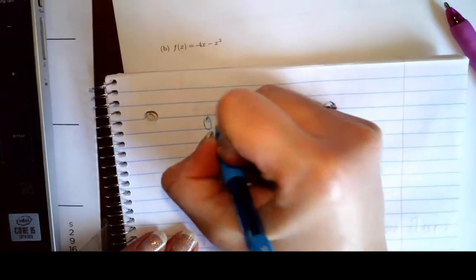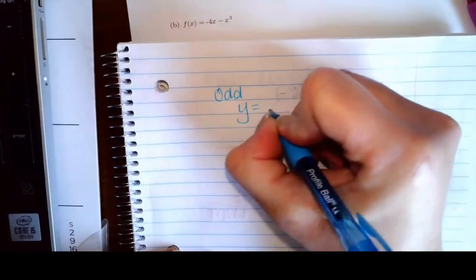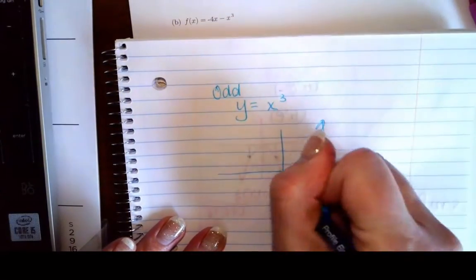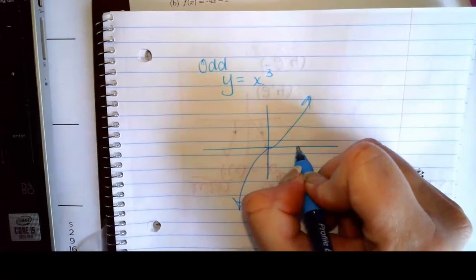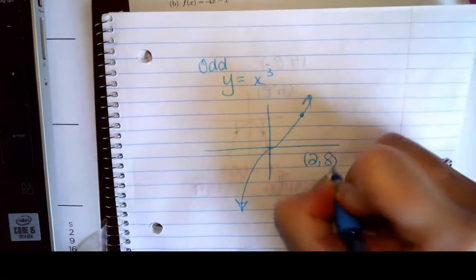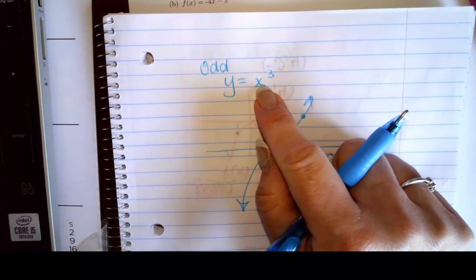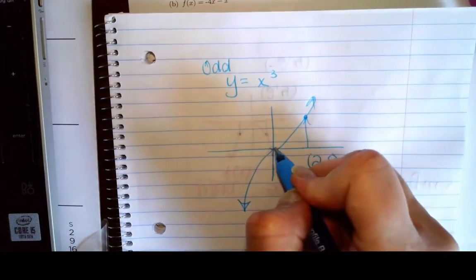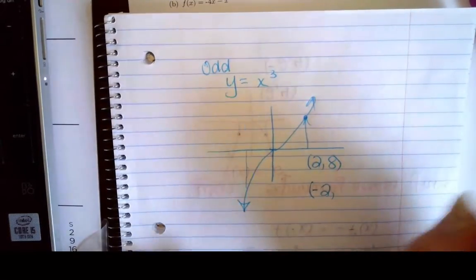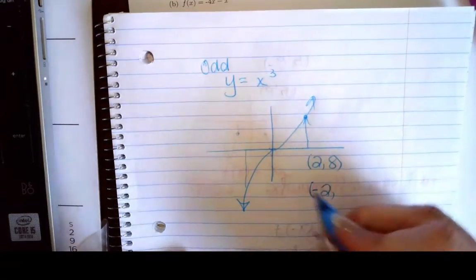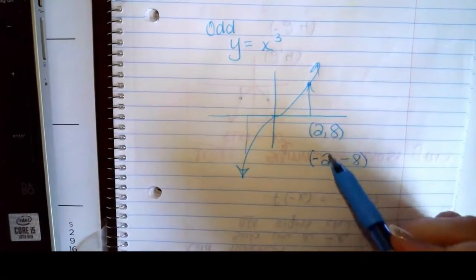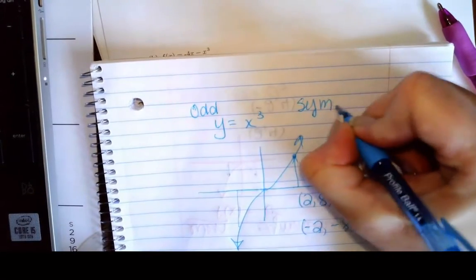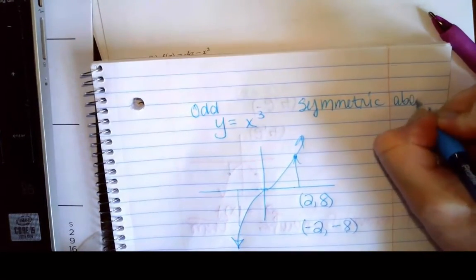What does that look like for an odd function? Let's try y equals x cubed. If I put in a positive x value like 2, that gives me the point (2, 8) because 2 cubed — 2 times 2 times 2 — is 8. What happens if I use negative 2? Negative 2 times negative 2 times negative 2 is negative 8. So if I change the sign on x, it changes the sign on y.